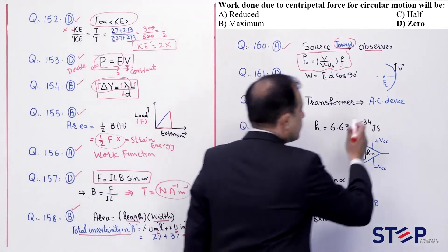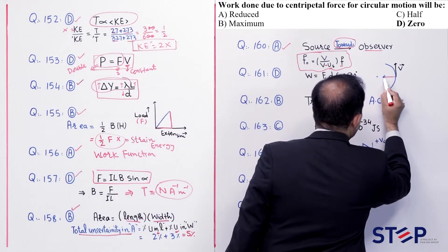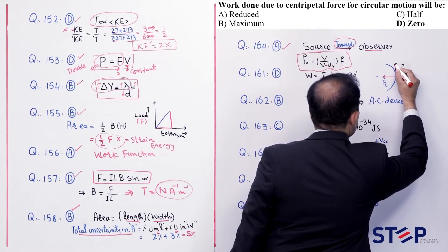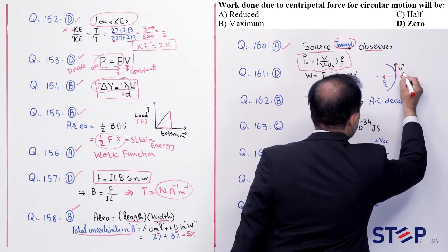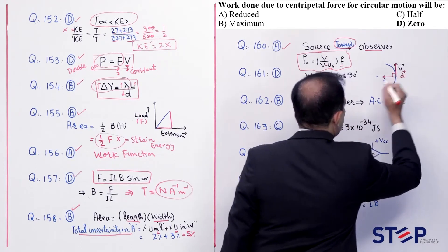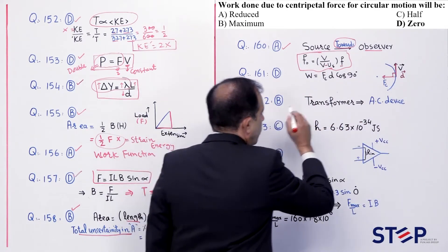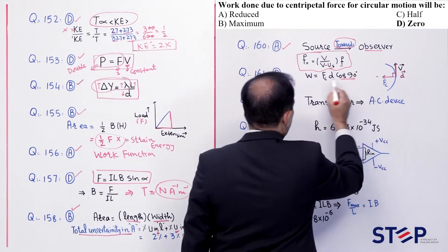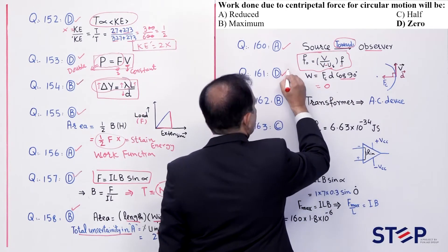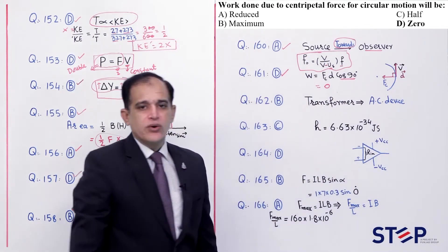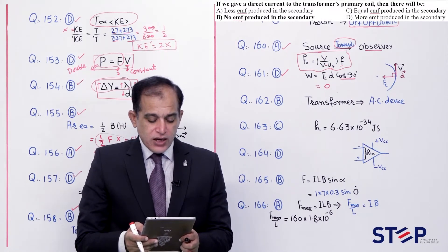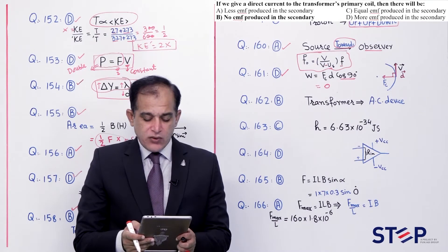Question number 161: Work done due to centripetal force in circular motion. Centripetal force hamesha centre ki taraf hoti hai, aur displacement tangent direction mein hoti hai. Force aur displacement mein 90 degree angle banta hai. cos90 = 0, toh work done = 0. Correct option: Delta.